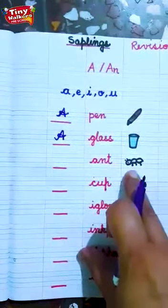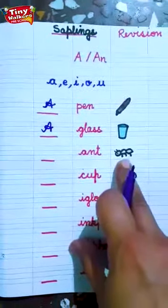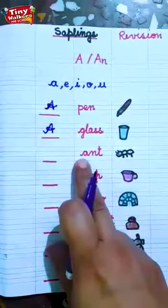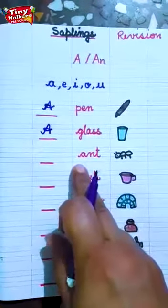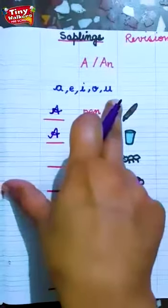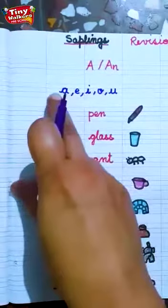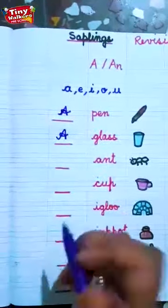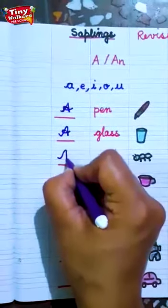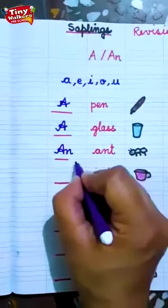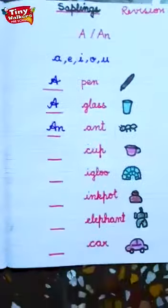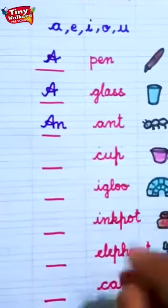What it is? Ant. Ant. So it's first letter is A. A. Now see, A is here. Yes. A is a vowel sound. So we will write An here. An ant. An ant. Now let's do the next one.